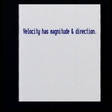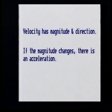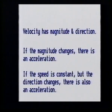We need two parameters to define velocity: magnitude and direction. If the magnitude changes, say from 20 meters per second to 25 meters per second, the car has accelerated. But what happens if the speed remains constant and the direction changes? This is also a change in velocity and so we have an acceleration.